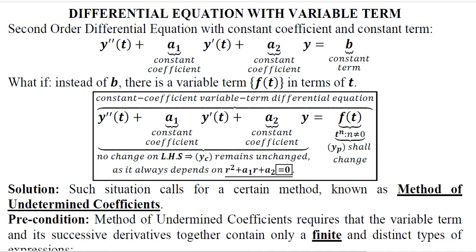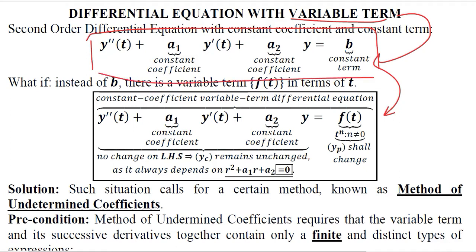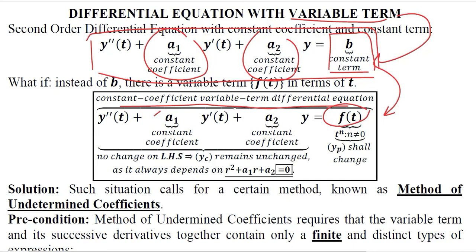In second-order differential equations, there is a certain situation where we have a variable term on the right-hand side. When this happens, we have a case that requires a different way of solution. This is the standard form we have been studying, with constant coefficients on the left-hand side and a constant term on the right-hand side. However, if we have a variable in terms of t on the right-hand side, we have a new case — a constant coefficient, variable term differential equation. The coefficients are still constant in nature, but the term has become variable.